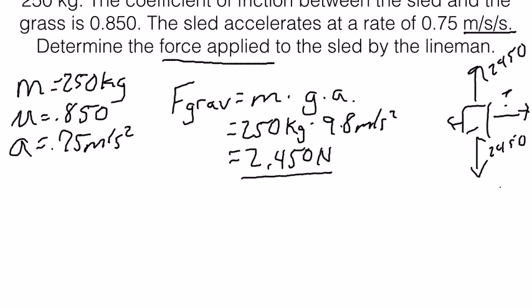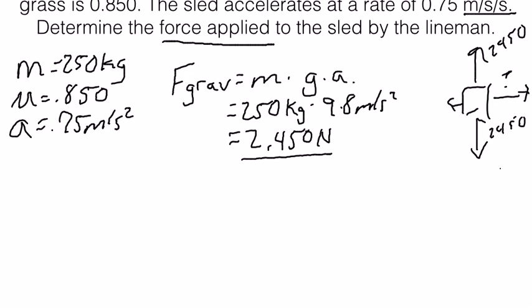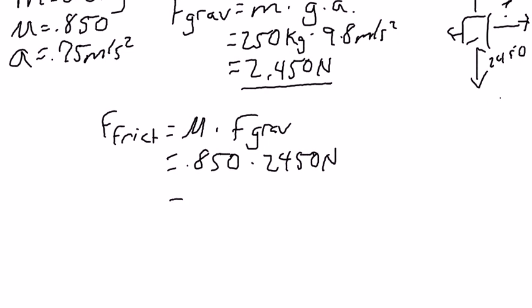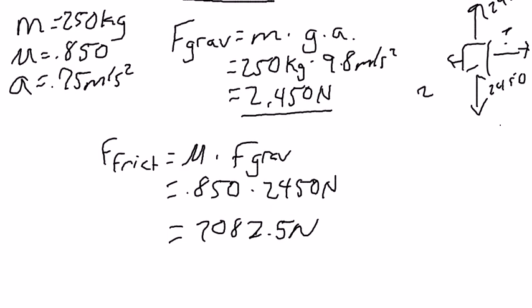So, we have our force of gravity. Now that we have that, we can solve for the force of friction using the previous equation. Force of friction is equal to the coefficient of friction times the force of gravity. So, we have 0.850 times the force of gravity, which we calculated to be 2,450 newtons, and when you multiply those numbers together, you will get 2,082.5 newtons. Now that we have the friction force, we can write that in here on our force diagram: 2,082.5 newtons.